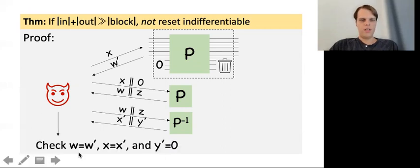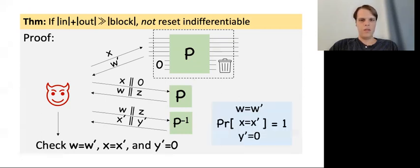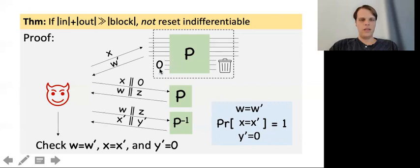The adversary then simply checks that w equals w', x equals x', and y' equals 0, outputting 1 if and only if all of these checks pass, and otherwise outputs 0. It should be clear that in the real world all of the checks will pass, so the probability that the adversary outputs 1 is 1. The checks for x equals x' and y' equals 0 are just needed to make sure that P and P-inverse are indeed inverses of each other, and that any simulator isn't cheating by setting the permutation oracle to be something trivial. The check that w equals w' is just to make sure that the hash function oracle and the permutation oracle are consistent with each other.